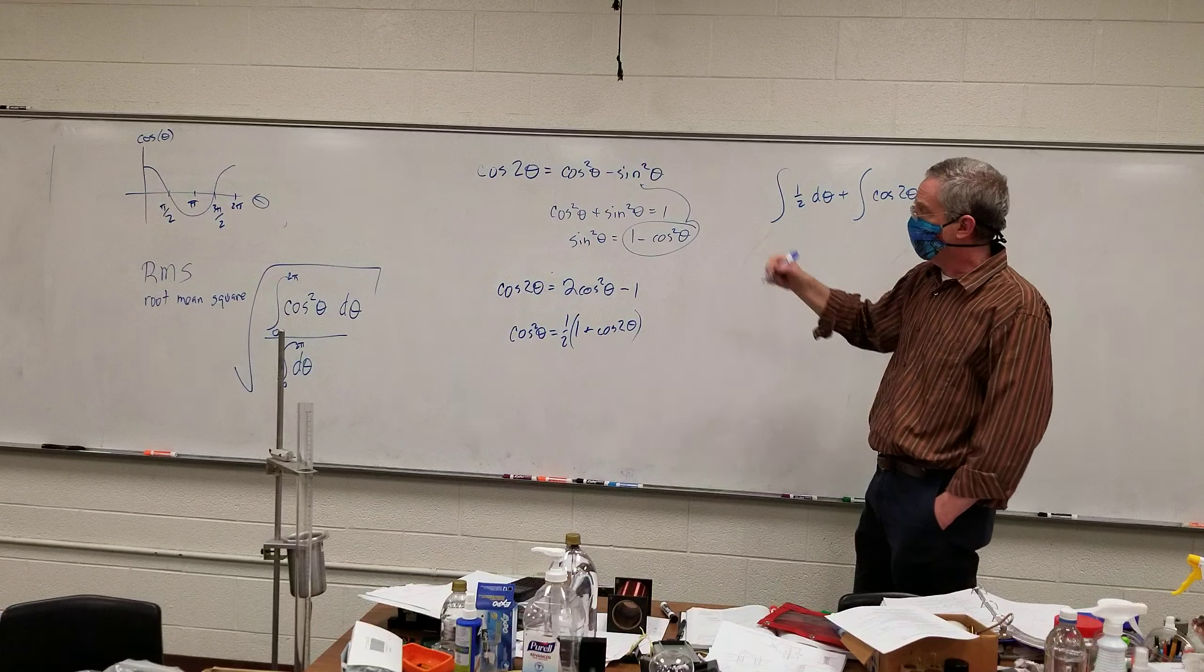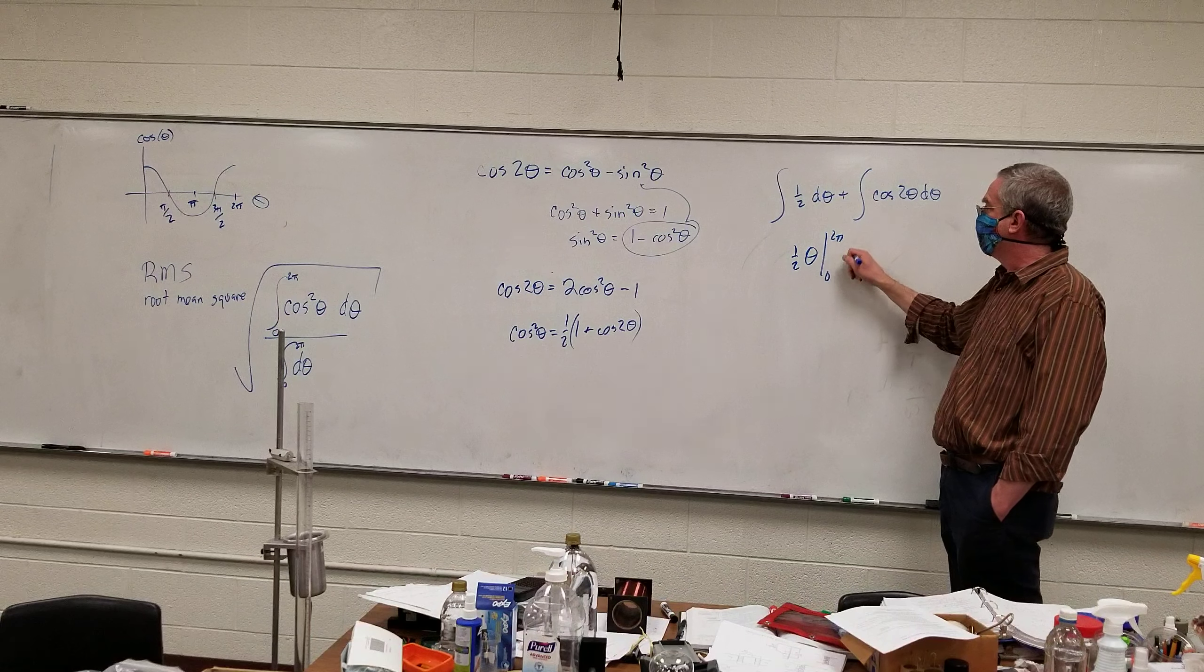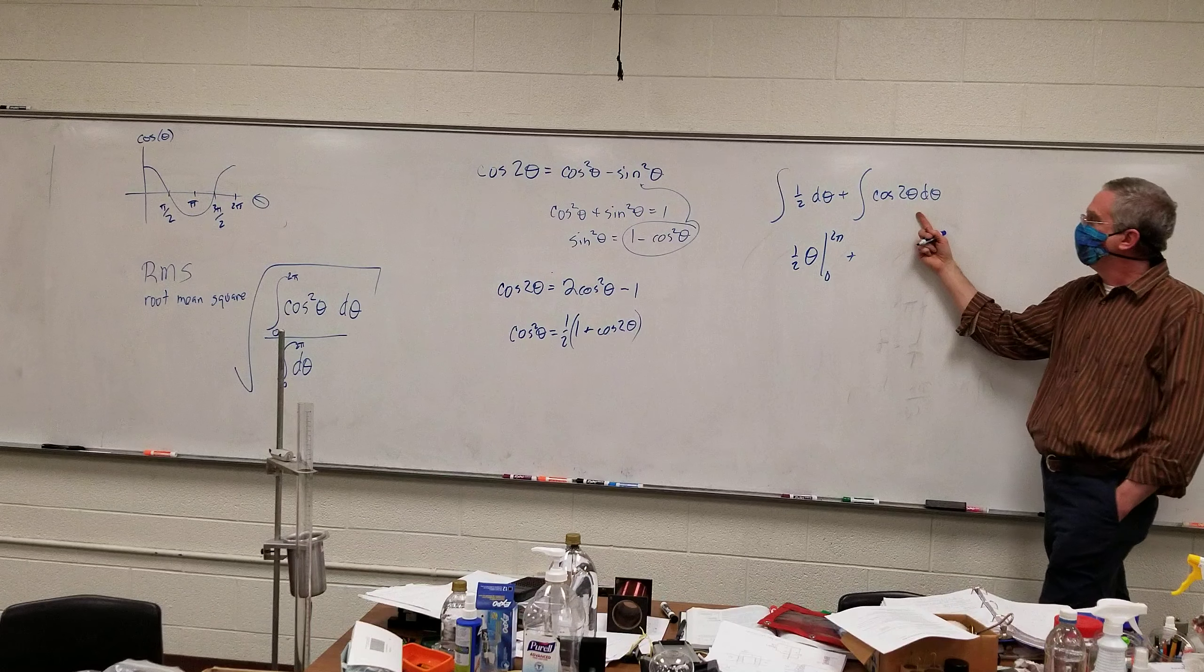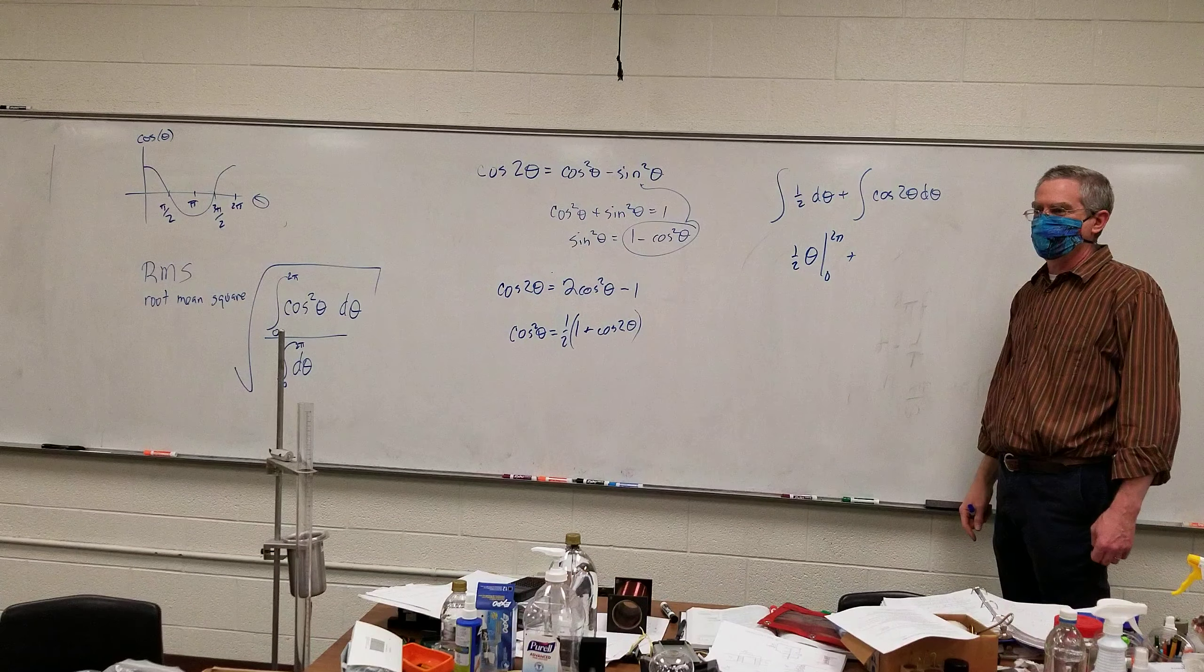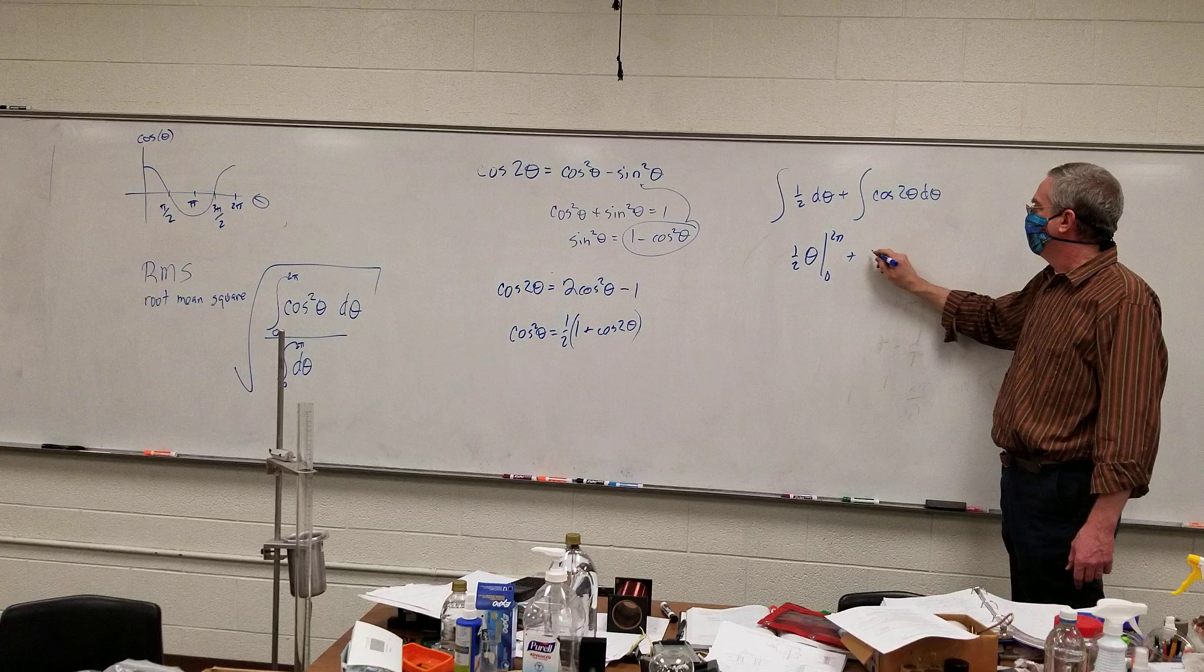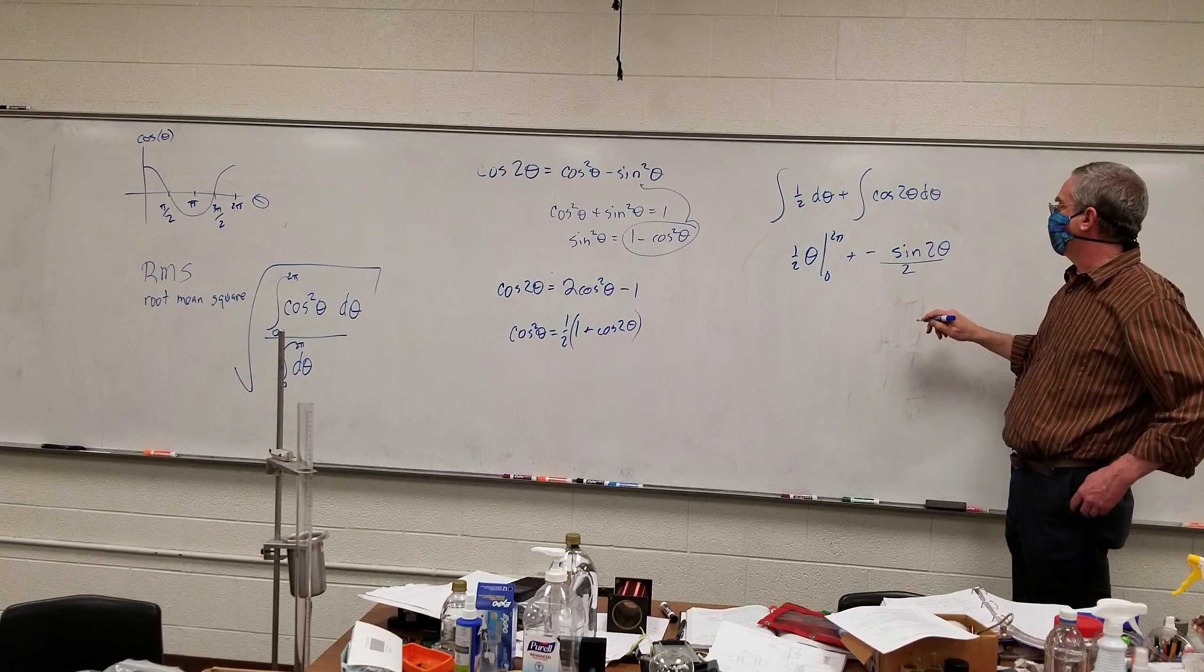So we have the integral of one half plus the integral of cosine of two theta d theta for the numerator. I got this one. Nice. Cosine squared theta minus sine squared theta. Oh. We never got out of the loop. What's the integral of cosine? Yeah, it's negative sine. All right. So we got a negative sine. We'll cancel out. Yeah, we need to do something with that two there. One half. Divide by two.